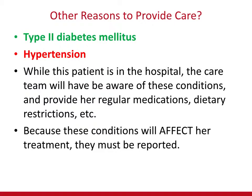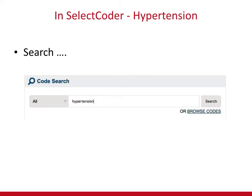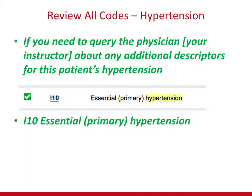We also have to remember the hypertension, because the nurses and doctors definitely need to pay attention to that as well. Back to the search bar in Select Coder — just type in 'hypertension.' Can you believe how many codes are there? Read them all. If you need to query the physician or your instructor about additional descriptors for this patient's hypertension — in this case, it's more probable the physician simply wrote 'hypertension' when it's basic essential hypertension without additional details. That lack of detail gets you to the complete code of I10, with the green checkmark telling you no more characters are needed.